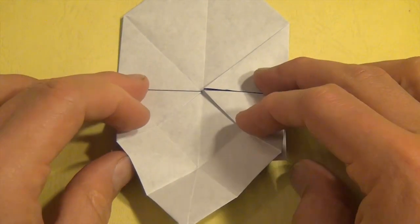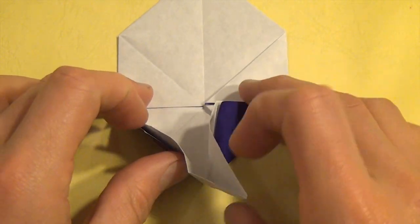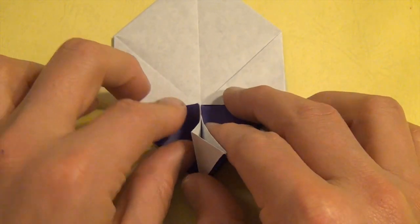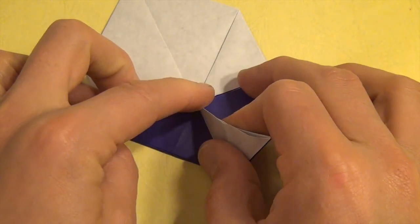And now we're going to form a rabbit ear. So fold them both together while pinching this corner up.